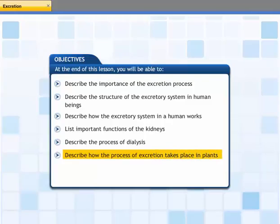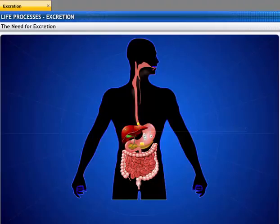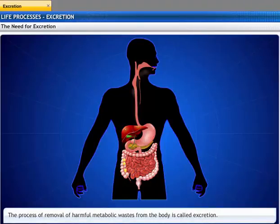All living organisms consume food to obtain nutrients and energy. The food is broken down into simpler molecules by the process of metabolism. These metabolic reactions create nitrogenous materials that are not required for the cells of the body and may even harm the body if not removed quickly. The process involved in the removal of these harmful metabolic wastes from the body is called excretion.